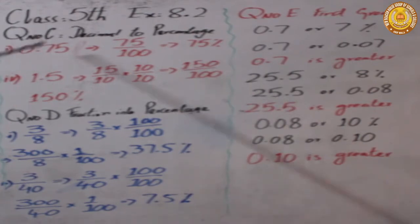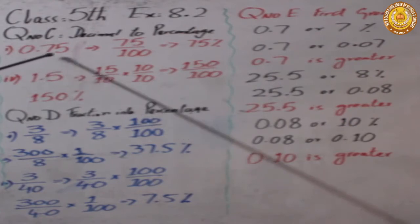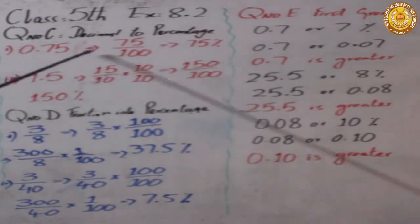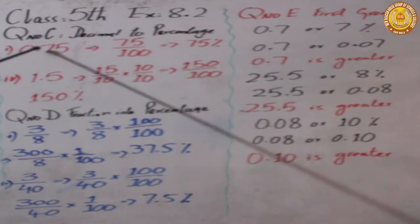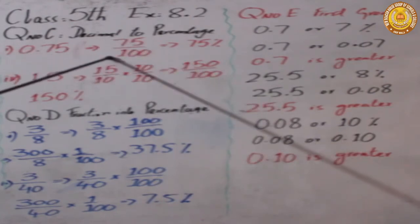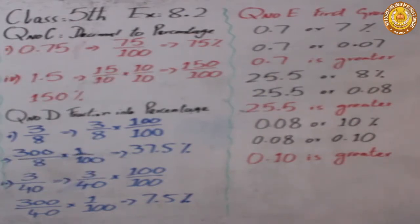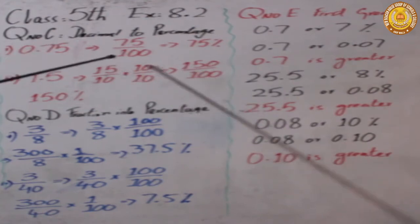The first question is 0.75. We will remove the decimal point and put it over 100, so it becomes 75 over 100. Whatever has 'over 100', that becomes that many percent — as we studied in the previous number. So we can write this as 75%.